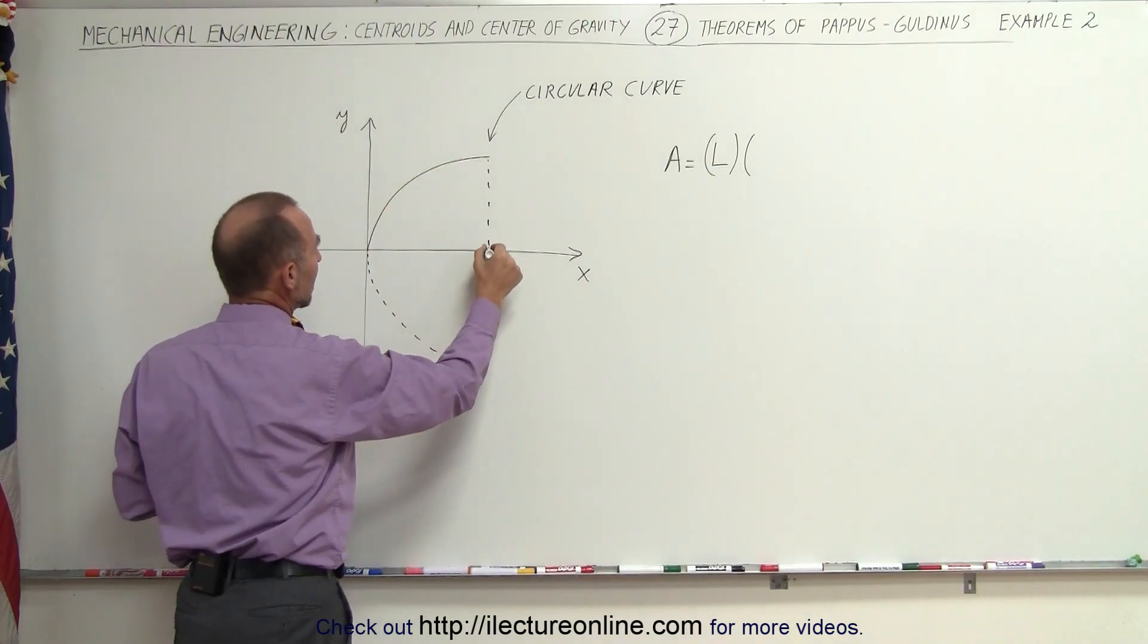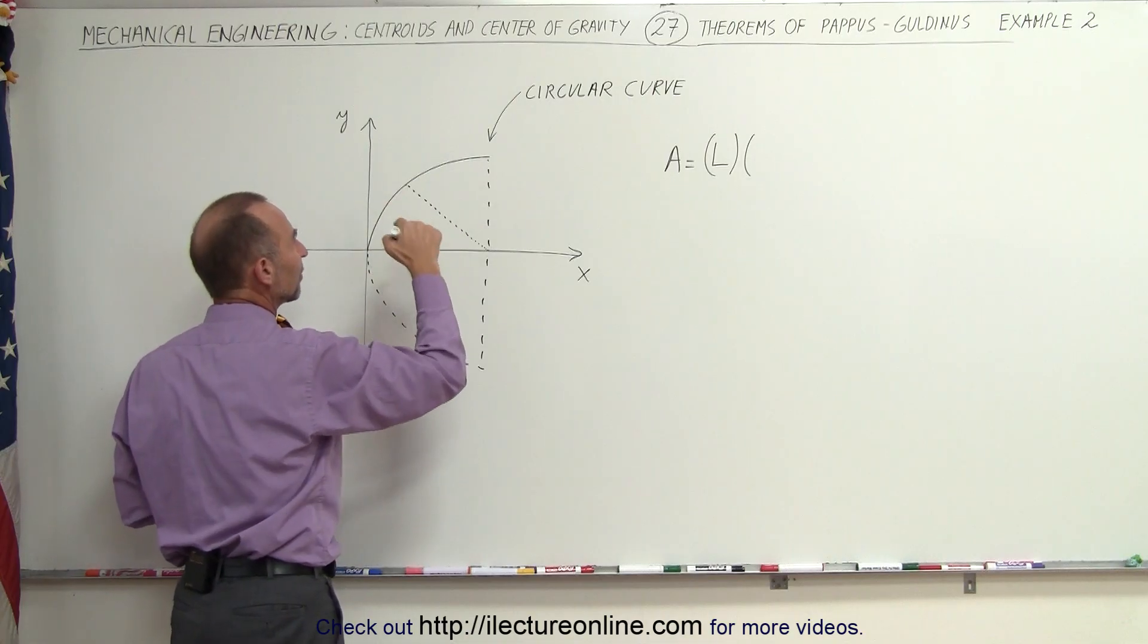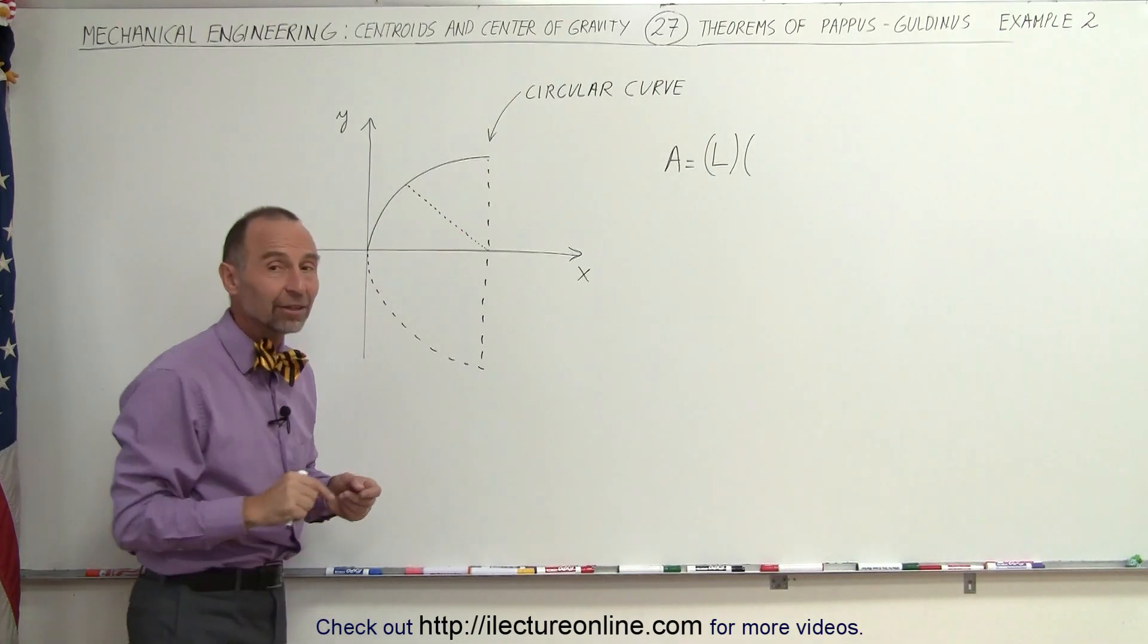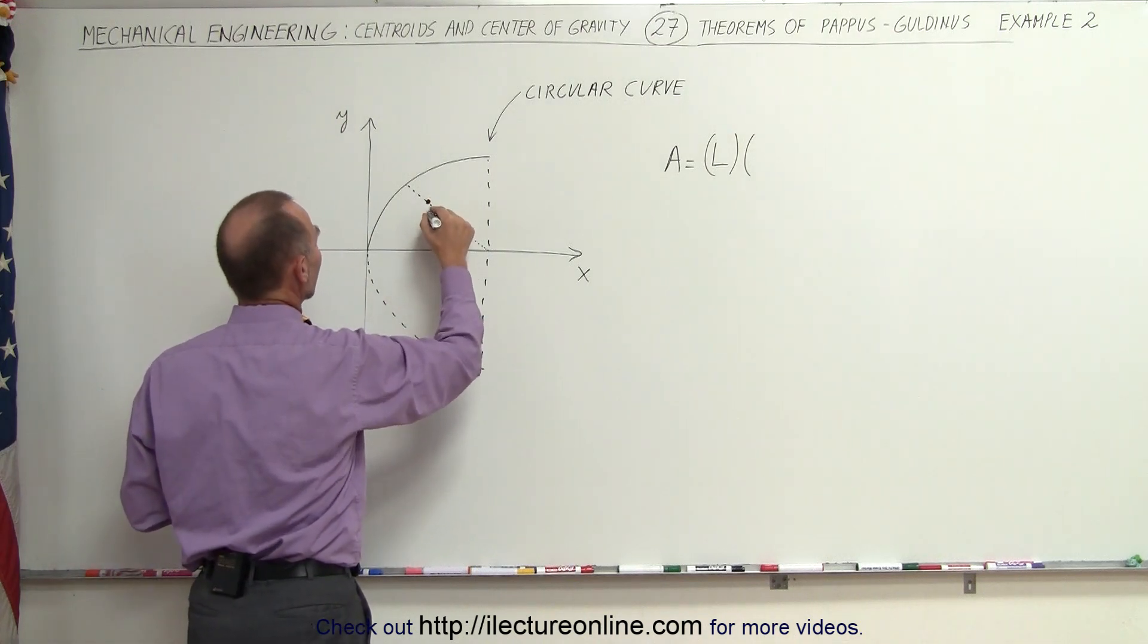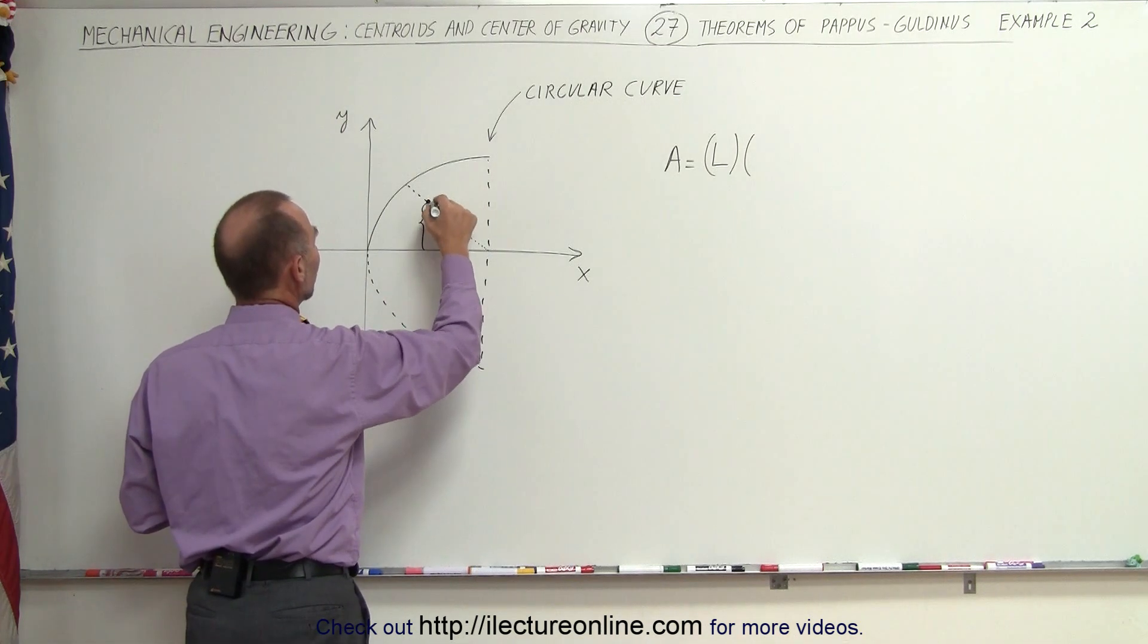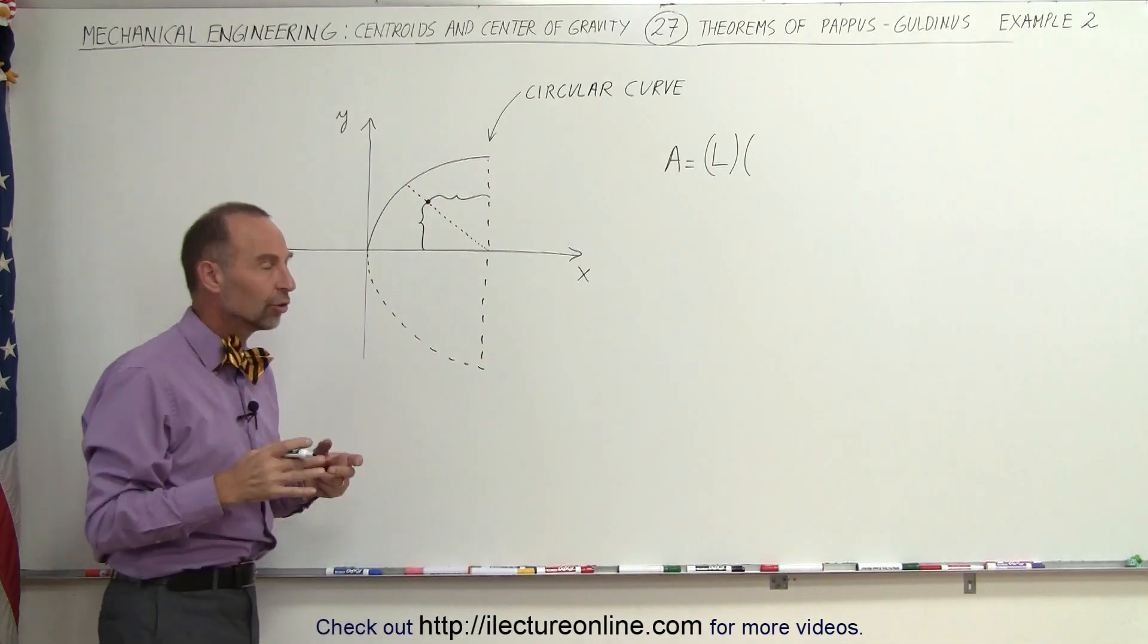where's the centroid of a quarter circle? It turns out that if we draw a line at a 45-degree angle, we know that the x and y-coordinate of the centroid must be on this 45-degree line. It'll be somewhere about here, and it turns out that this distance here will be the same as this distance there, because it's a perfect symmetrical shape.